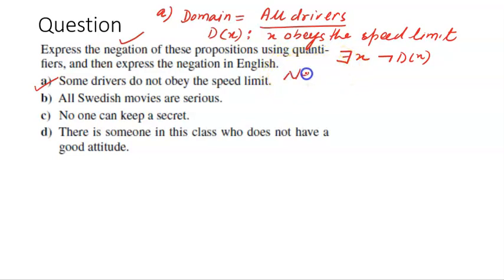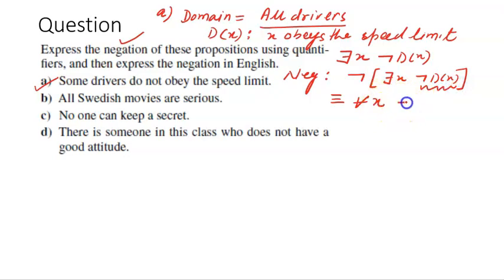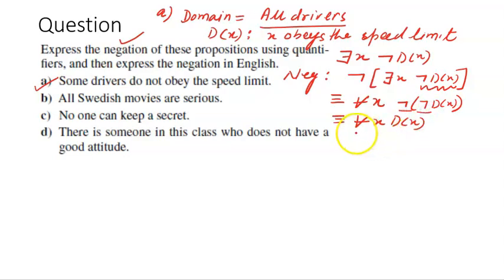The next part is: what is the negation? The negation is: negation of [∃x ¬D(x)]. We know the laws of equivalence — negation of 'there exists' becomes 'for all x', and then we take the negation of the inner statement. We already have a negation, so that becomes negation of negation of D(x). This finally translates into: for all x, D(x). Negation of negation of D(x) becomes D(x).